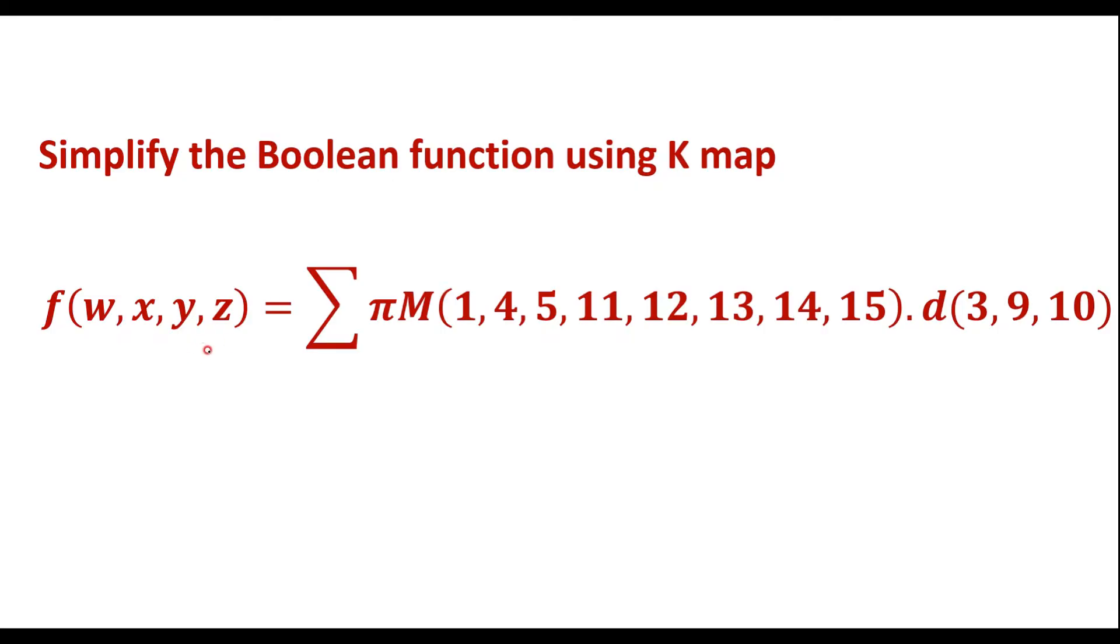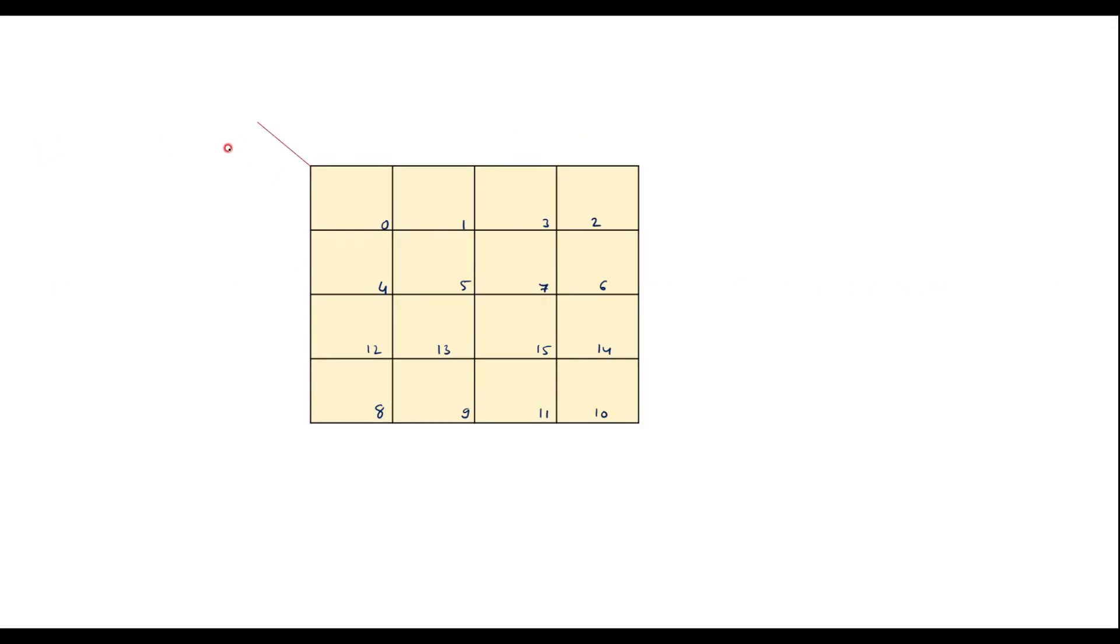So we are supposed to use 4-variable K-map, which is having 16 cells. So here, this will be w, x. I will use y, z variable here.